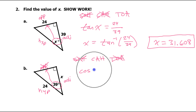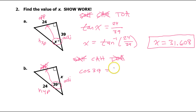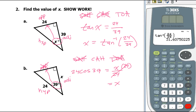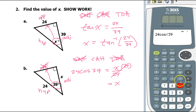Cosine — and we always put the angle. Cosine of 39 is equal to adjacent over hypotenuse, so that's going to be x over 24. When the variable is in the numerator, that's when you multiply both sides by the denominator. That gets x by itself. So 24 cosine 39 goes in the calculator — 24 cosine 39 — so that's 18.652, got to round up.